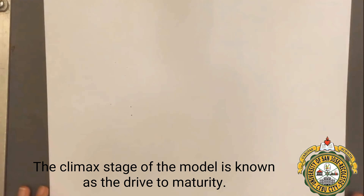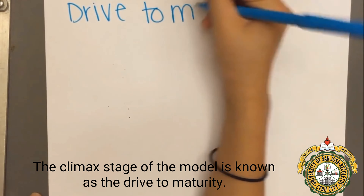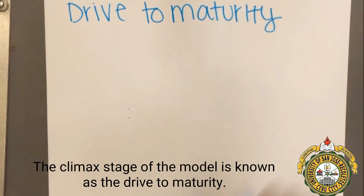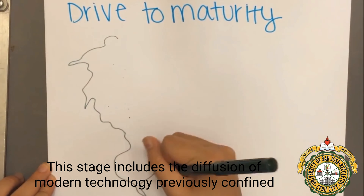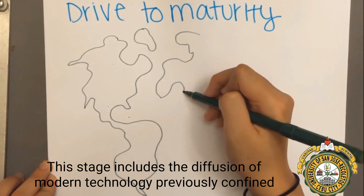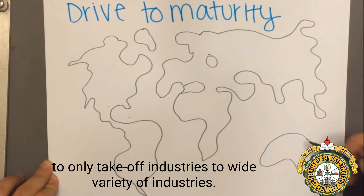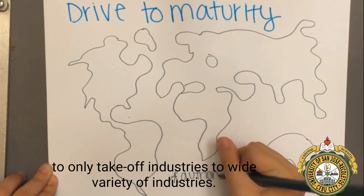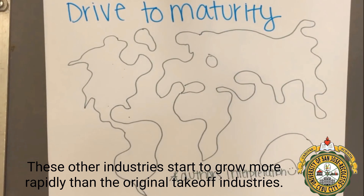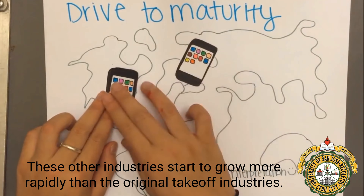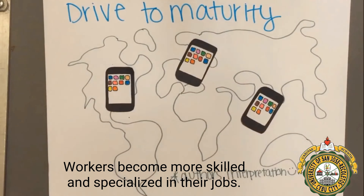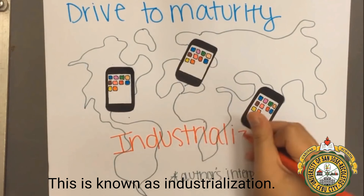The climax stage of the model is known as the Drive to Maturity. This stage includes the diffusion of modern technology, previously confined to only takeoff industries, to a wide variety of industries. These other industries start to grow more rapidly than the original takeoff industries. Workers become more skilled and specialized in their jobs — this is known as industrialization.